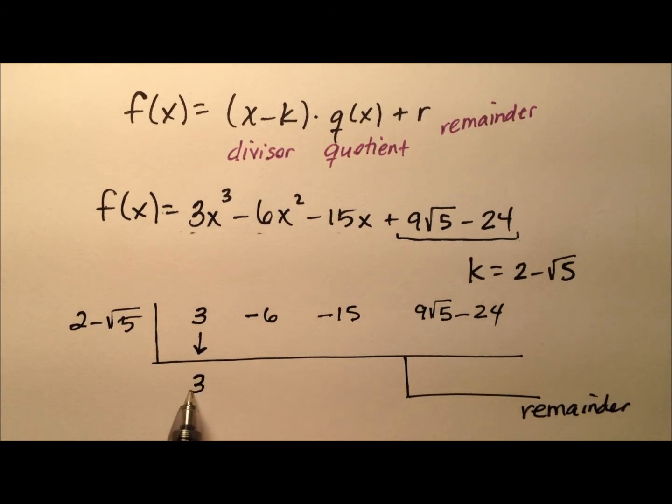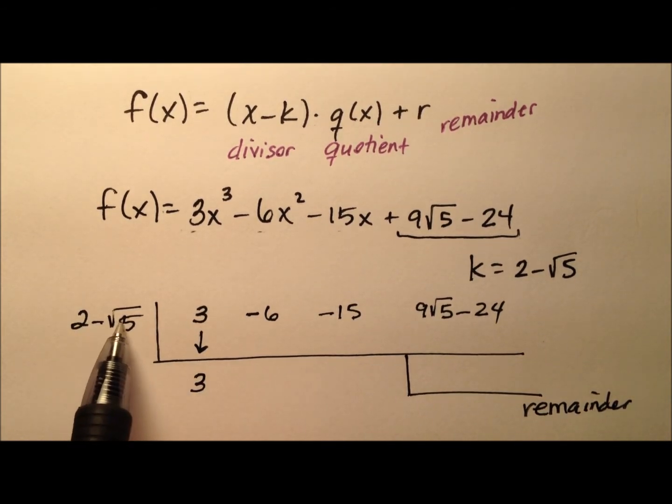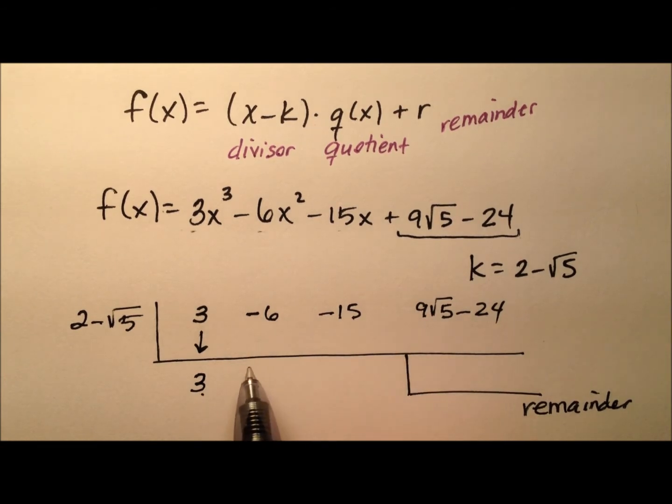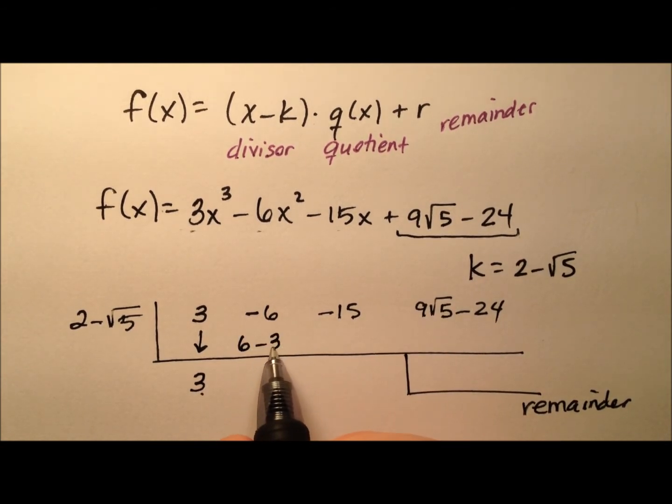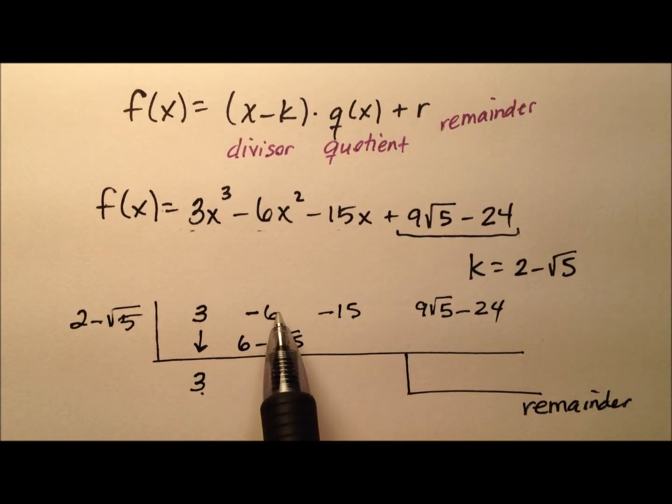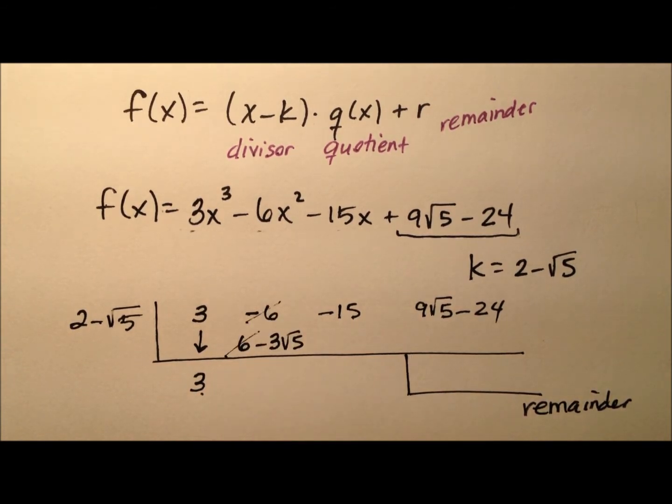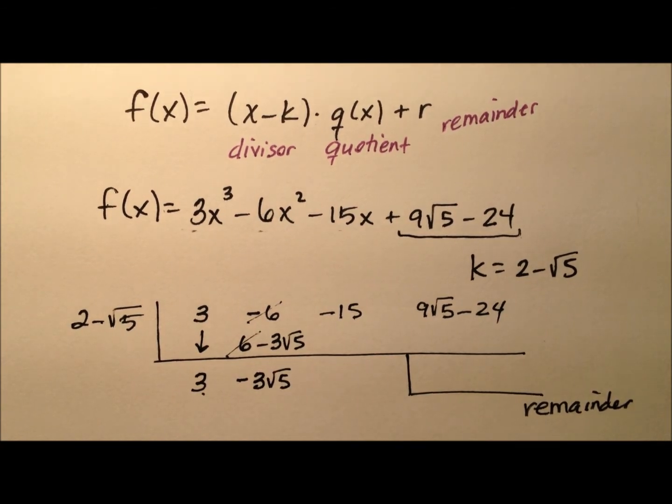Okay, so bring the 3 down. Let's multiply now, 2 minus radical 5 times 3, and that will give me 6 minus 3 radical 5, and then I add these columns. It looks like the negative 6 and the positive 6 will cancel, so I just have negative 3 radical 5 right there. Okay, not bad.